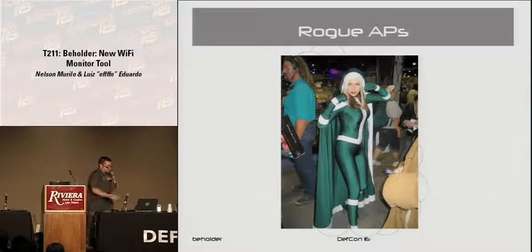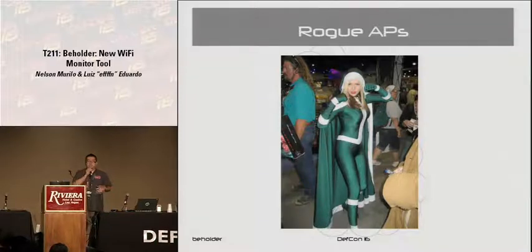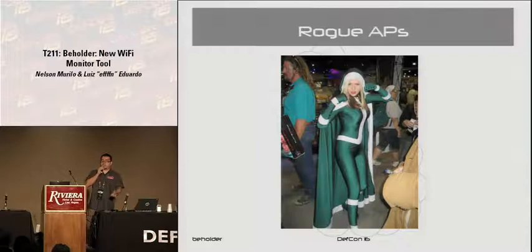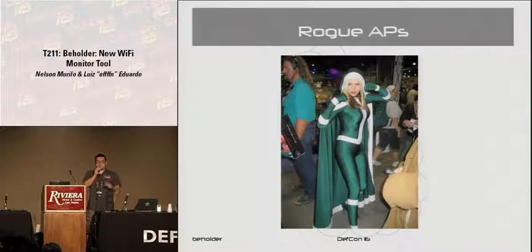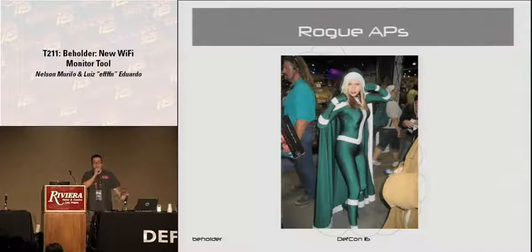Rogue access points — this could be a whole talk by itself. A rogue access point is any malicious access point. From a vendor perspective, some vendors classify a rogue access point as one that is plugged into your network. Somebody went to Fry's for lunch, doesn't feel like working, plugs in a router he bought for home. The company has the best wireless network using 802.1X, WPA2, the whole nine yards — but now you have a Linksys open network in your office.